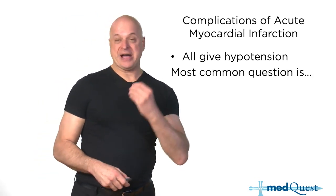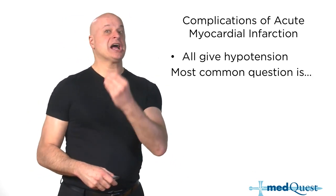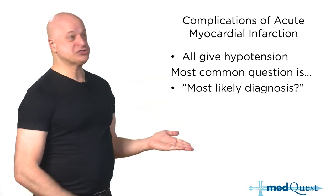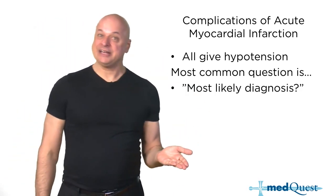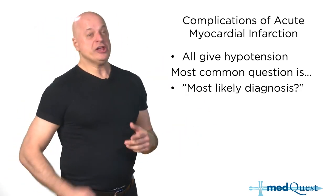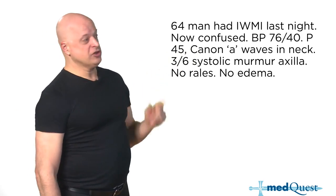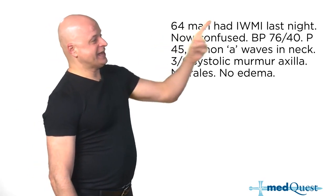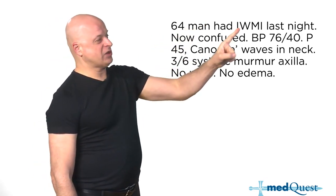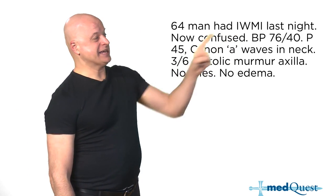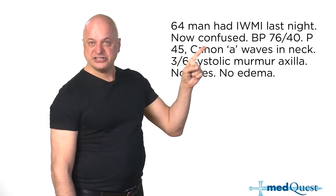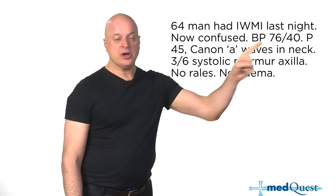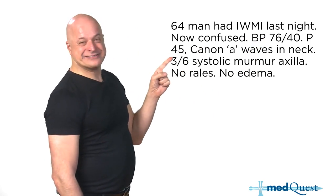The most common question for a myocardial infarction complication is: what's the most likely diagnosis? They'll show you history, physical, maybe some labs. A 64-year-old man had an inferior wall MI last night. Now he's confused. Why is he confused? Because his blood pressure is low and his pulse is 45.